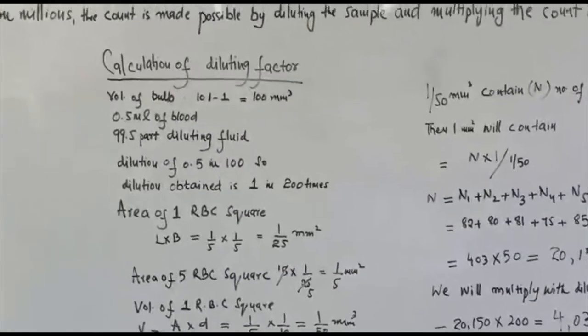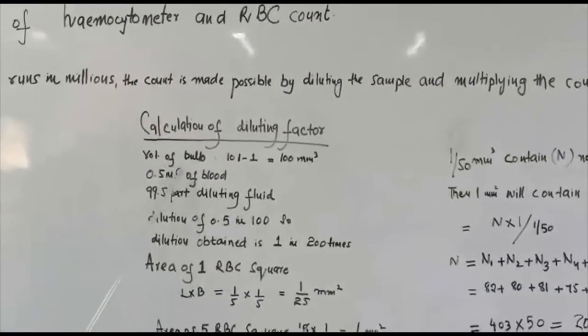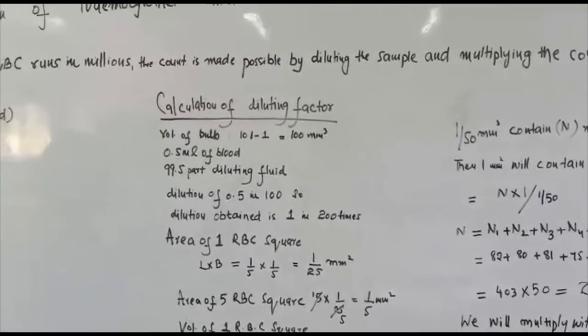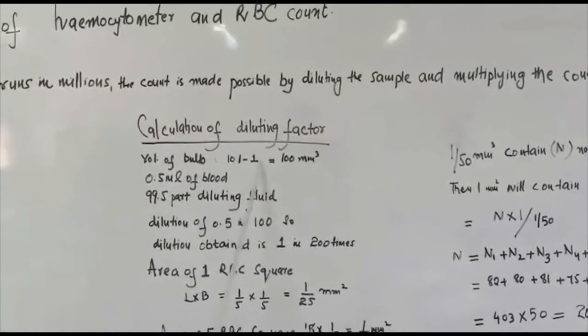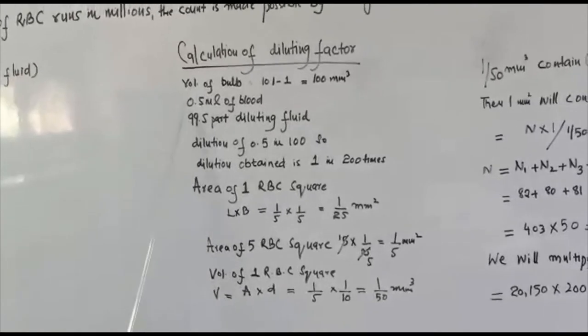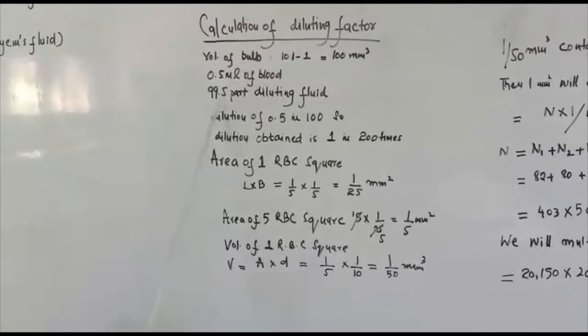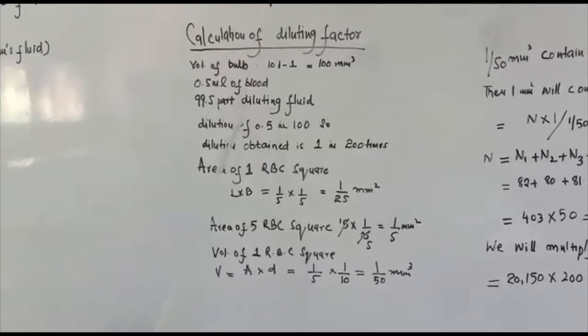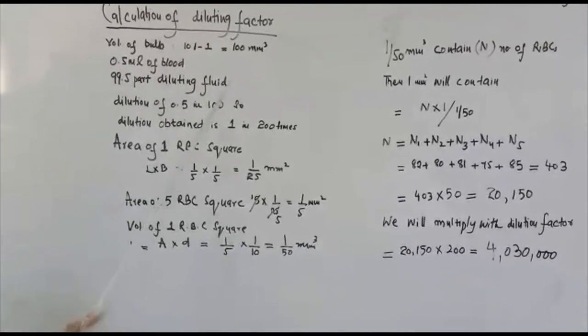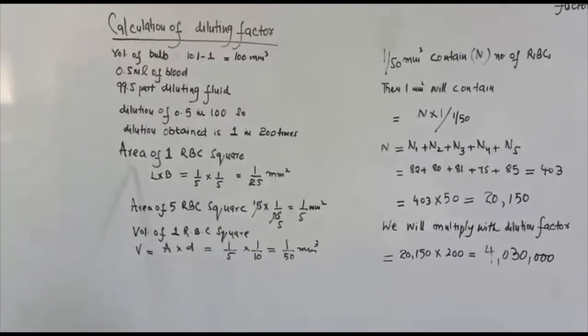To calculate the RBC count, first we calculate the diluting factor. The volume of the bulb is 101 minus 1 equals 100 cubic millimeter. We minus the one part because the stem of the pipette does not take part in dilution. Now 0.5 ml of blood in the RBC pipette with 99.5 part of diluting fluid gives dilution of 1 in 200 times.